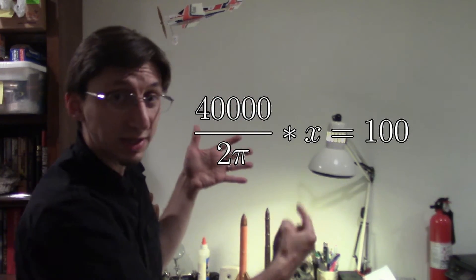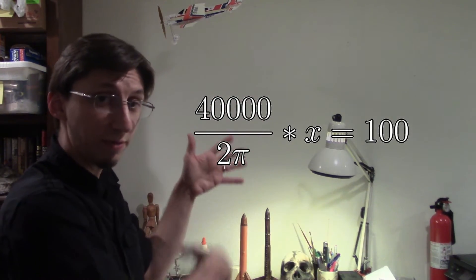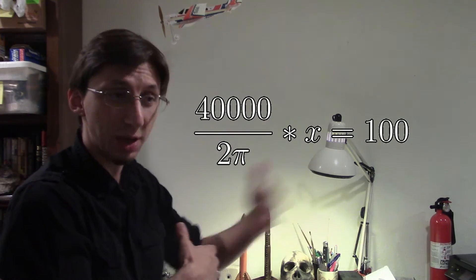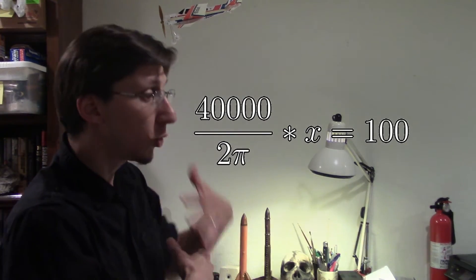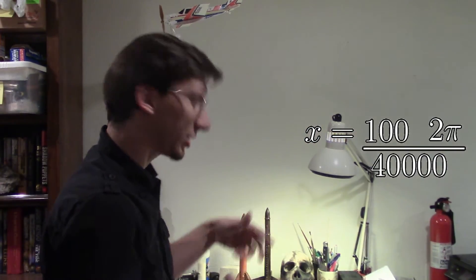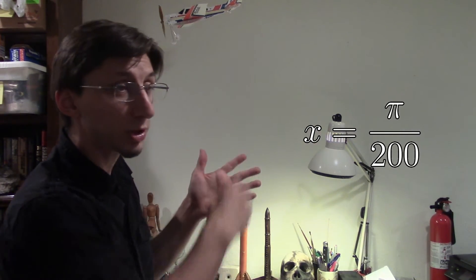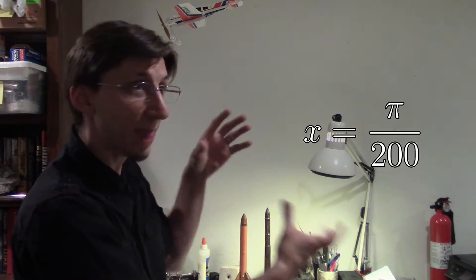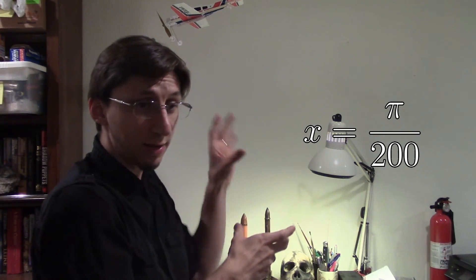That something is going to be the conversion factor. So what I want to do is I want to figure out the something so that I can convert from the pixels, of the 110 pixels that the Moon traveled, to that in kilometers. A little bit of algebra and rearranging, I figure out that x equals π divided by 200. That's the number you divide the number of pixels by to get the number of kilometers.